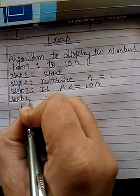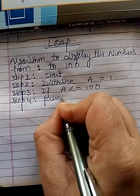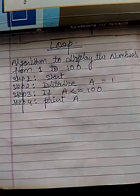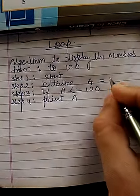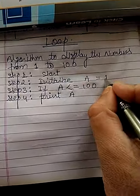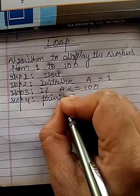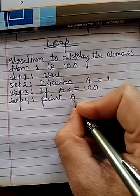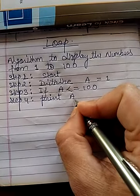Step 4. Print the value of a. We have initialized the variable a by 1. 1 is less than 100. This condition is true. So, it will print the value of a.